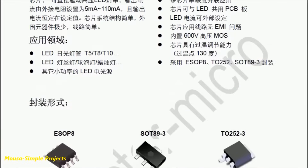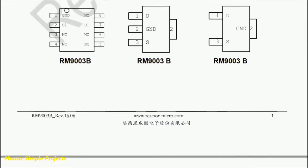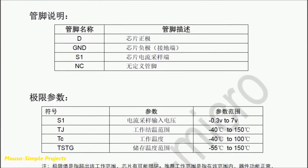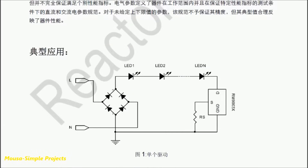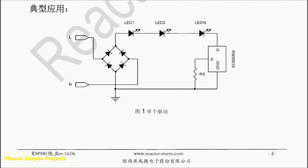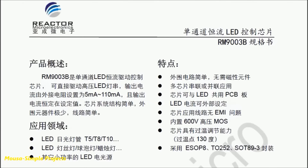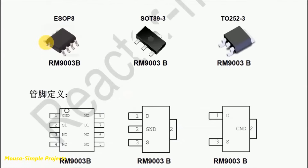This is the datasheet of the IC. Unfortunately I can't find an English datasheet for it, but you can translate it — it's fairly obvious even without translation. It can drive LEDs with a current range from 5mA to 110mA. It has a MOSFET inside that can handle 600V. There are 3 different packages for this IC, and I have the SO8 package.